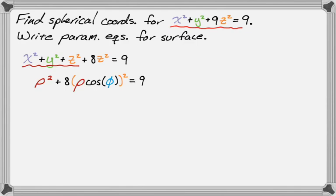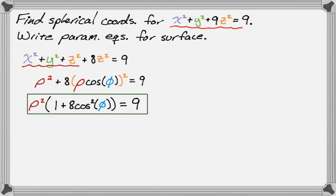If I expand the left-hand side, I can factor ρ² out of everything. I get ρ² times the quantity (1 + 8cos²(φ)) = 9. Now, if all I'm trying to do is change from rectangular to spherical coordinates, I could say I'm done.